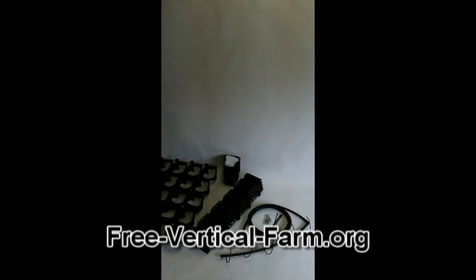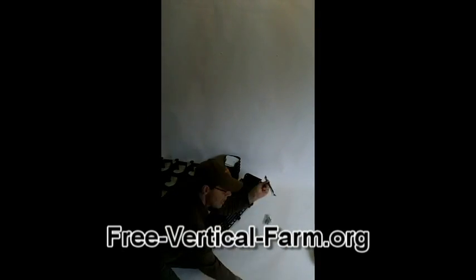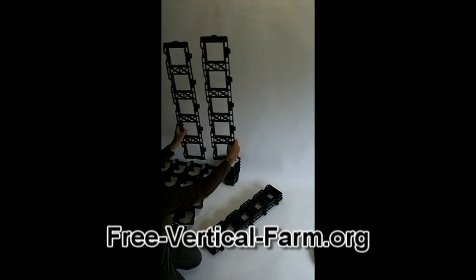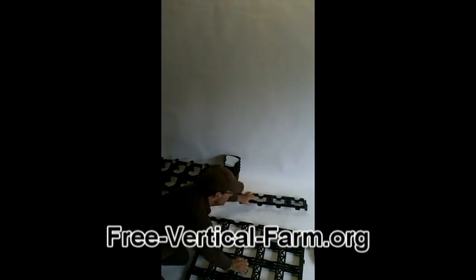This is the vertical farm starter kit. I'll quickly show you how it goes together - normally it takes about 10 minutes. Take the individual module frames that you can use vertically or horizontally, place them on the ground, and then clip them all together.